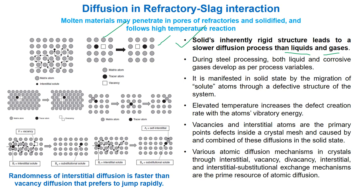Elevated temperature increases the defect creation rate with the atoms' vibratory energy. Vacancies and interstitial atoms are the primary point defects inside a crystal mesh, and are caused by the combination of these diffusions in the solid state.